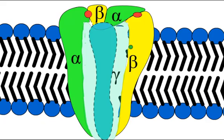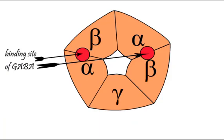The GABA-A receptor is a pentameric transmembrane receptor consisting of 5 subunits: 2 alpha, 2 beta, and a gamma subunit arranged around a central pore.